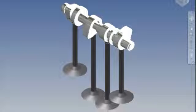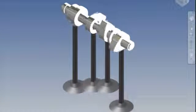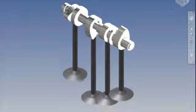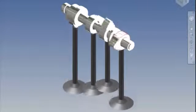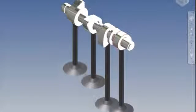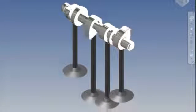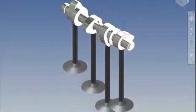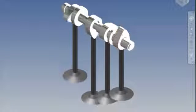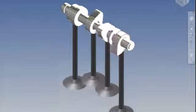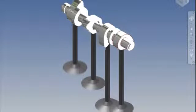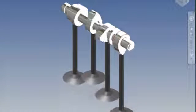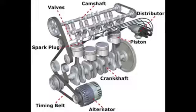Here, you can see the camshaft turning and pushing the valves open and closed. The valves are attached by springs that you can't see in this animation; however, the springs return the valves back up to their starting position. You can see the basic concept of how the camshaft with the lobes pushes the valves down as the oblong-shaped part of the circle comes around.